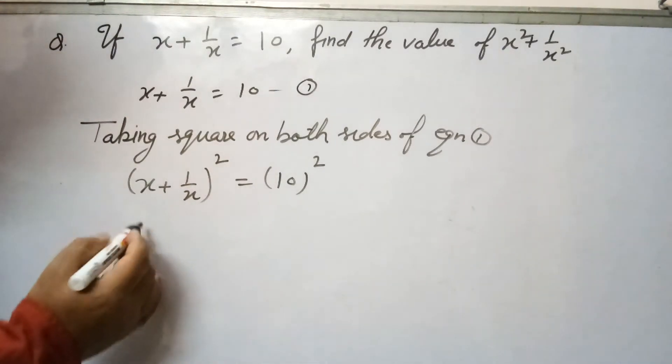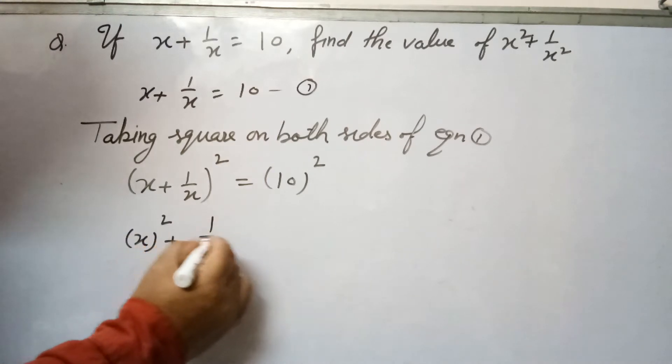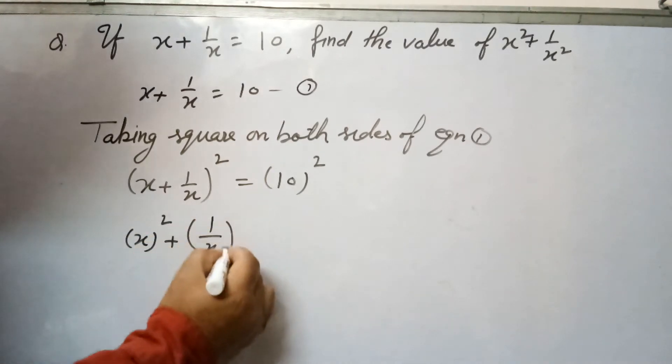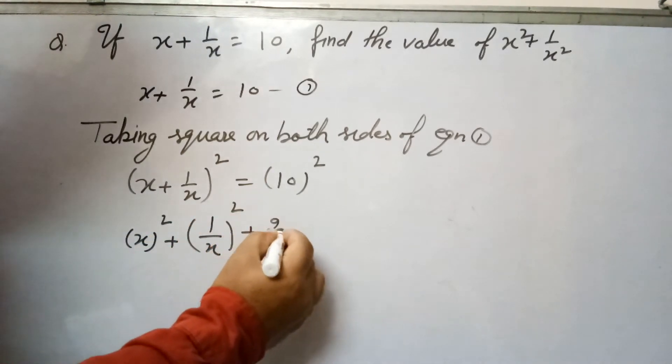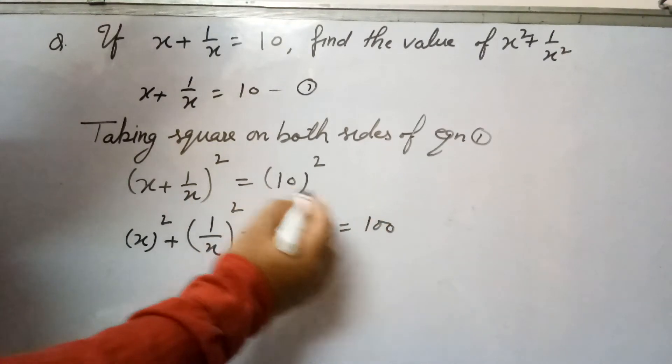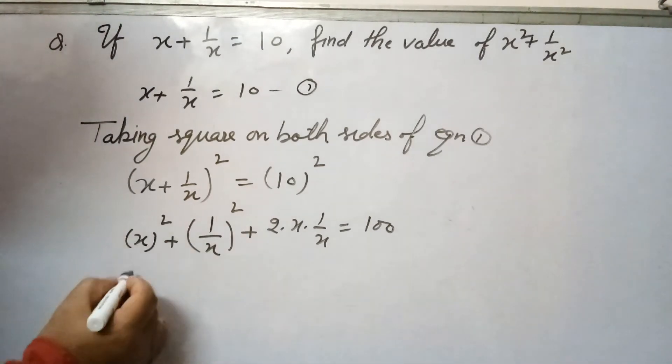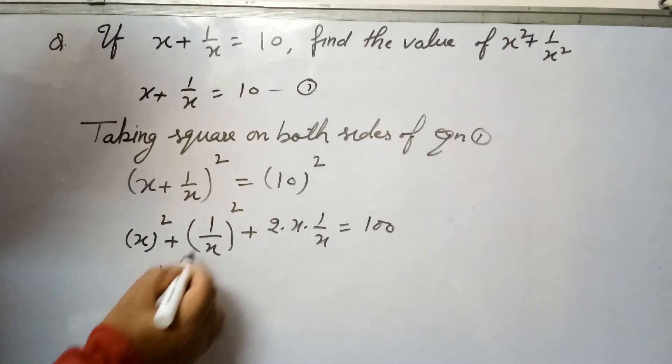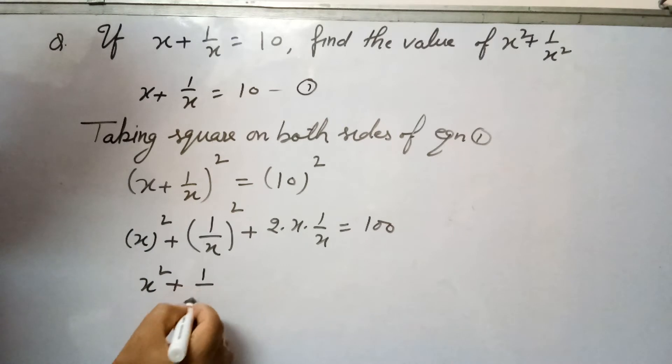Square of this is a square plus b square plus 2 into a into b equals 100, or 10 square is 100. So this is x square, 1 square is 1, x square is x square plus these x cancel each other out.